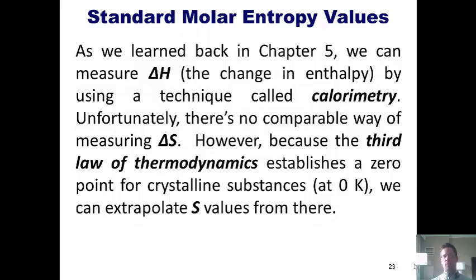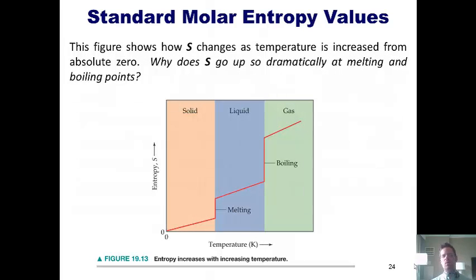As we learned back in chapter five, we can measure delta H, which is the change in enthalpy, by using a technique called calorimetry. Unfortunately, there's no comparable way of measuring delta S. However, because the third law of thermodynamics establishes a zero point for crystalline substances, zero K, we can extrapolate S values from there. This figure shows how entropy changes as temperatures increase from absolute zero. You'll note that at absolute zero, we have an entropy value of zero. This is the theoretical temperature at which all molecular and atomic motion ceases completely because it's so darn cold.